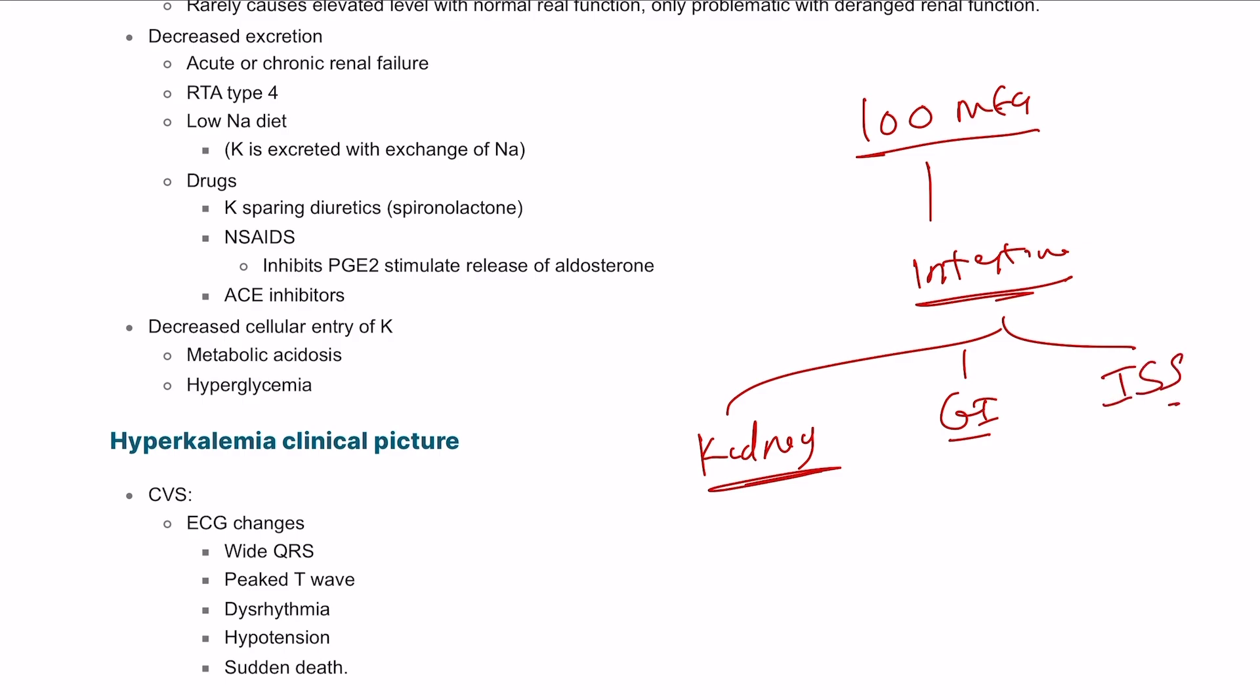In the kidney it's 90 percent, the GI tract 10 percent, and 2 percent in the interstitial space. In the kidney it gets excreted by the effect of aldosterone in the distal convoluted tubule and also the collecting duct.